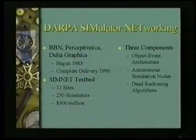Number one, you have to have some kind of object event architecture. You have to have a structure that says, here's information about the objects in the virtual world — my position, my orientation, my appearance. And you've got to have information about the events: the fact that I fired a weapon, the fact that an explosion happened, the fact that I crashed into a building, the fact that the vehicle exploded — something that describes the events happening between the objects.